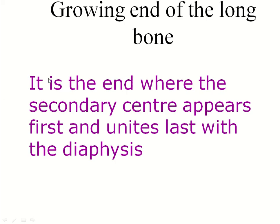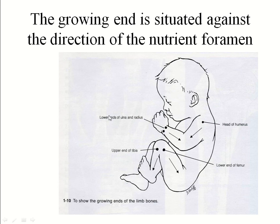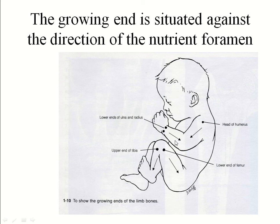The growing end of the long bone is the end where the secondary center appears first and unites last with the diaphysis. The growing end is situated against the direction of the nutrient foramen. Based on the fetal position of the upper and lower limbs: for the humerus, the upper end is the growing end; for the radius and ulna, the lower end is the growing end; for the femur, the lower end is the growing end; and for the tibia, the upper end is the growing end.